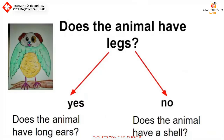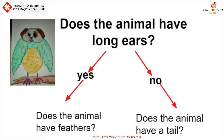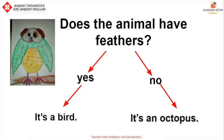Now let's look at this mixed-up animal. What animal do you think it is? We are going to look at our identification keys — these are yes/no questions about the animal and its body parts. Does the animal have legs? Yes or no? If yes, does the animal have long ears? If no, does the animal have a shell? Does the animal have a tail? Does the animal have feathers? If you say no, it's an octopus. These are examples for your identification keys.